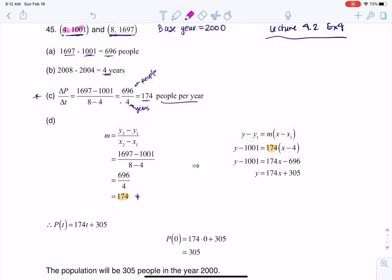I'm plugging those into my point-slope formula, and here I'm getting my linear model. I'm going to write it in function notation with the letters given - P for population and T for years. This becomes a P and this becomes a T instead of y and x, but they asked me what was the population in the year 2000? Well, since 2000 is my base year, that would mean T would equal 0, so when I plug that in, I get 305 people.